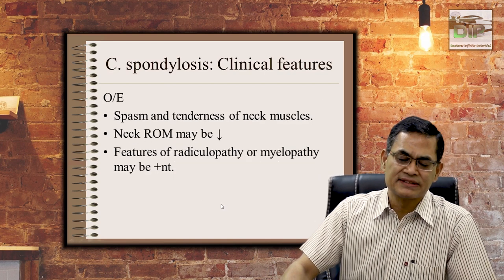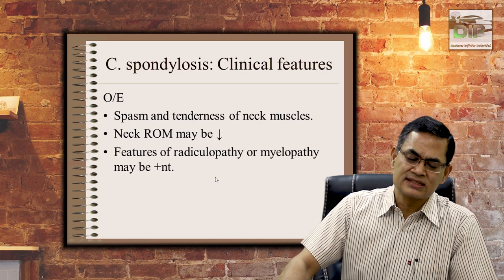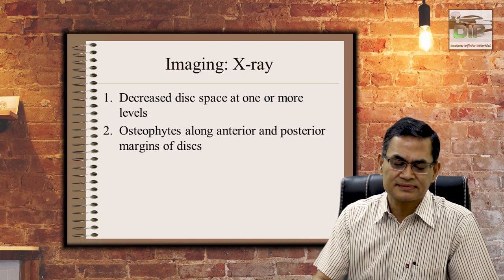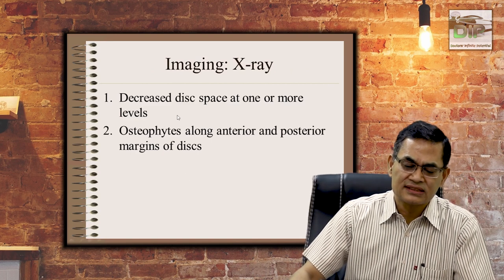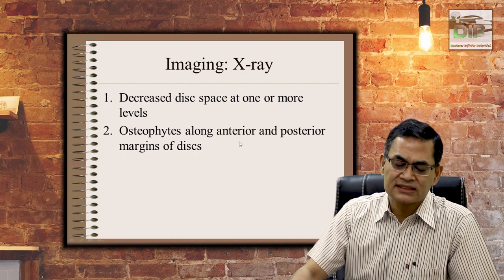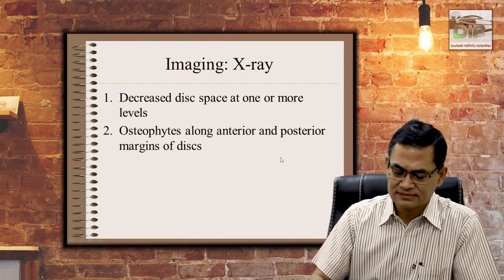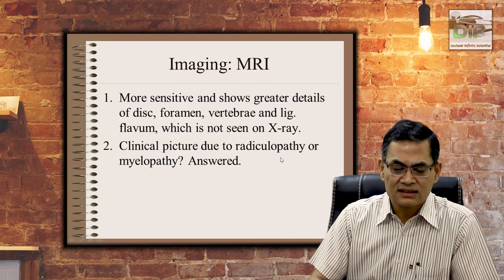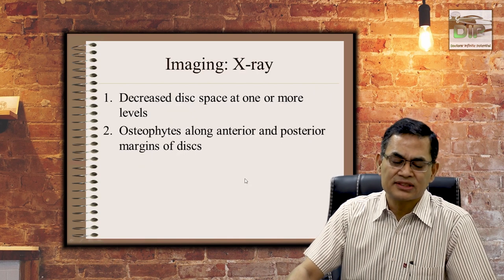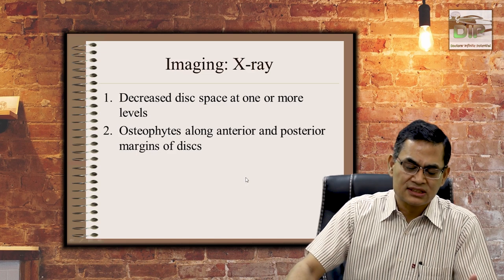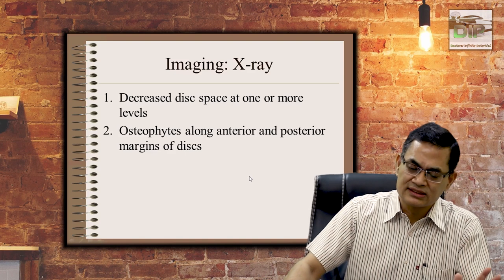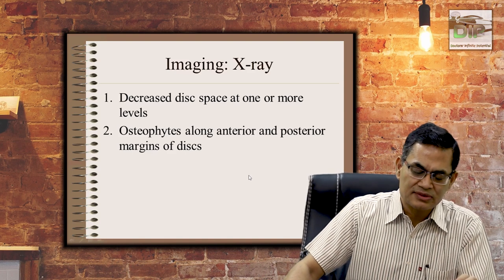On examination, you will find spasm and tenderness of neck muscles, restricted neck range of motion, and possibly features of radiculopathy or myelopathy. On X-ray, you will find decreased disc space at one or more levels, osteophytes along the anterior and posterior margins of the disc, and subchondral sclerosis at the end plates — superior and inferior — similar to findings in osteoarthritis of the knee and hip.